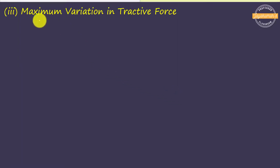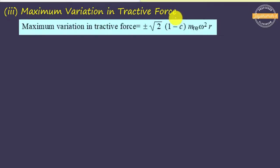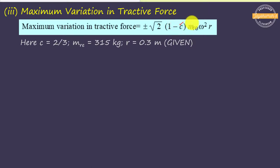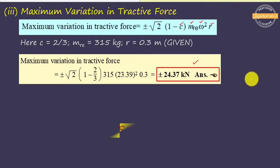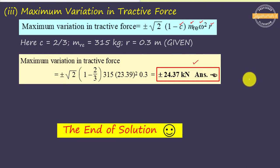The last subdivision is to determine the maximum variation of tractive force. Using the formula with c = 2/3, the actual reciprocating mass per cylinder as given in the problem, the crank radius r, and the value of ω already found, we substitute all values to obtain the maximum variation of tractive force as ±24.37 kN. We have determined all required answers. Hope you found this video useful — take care, bye.